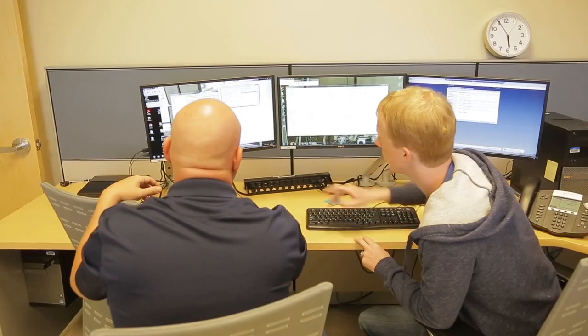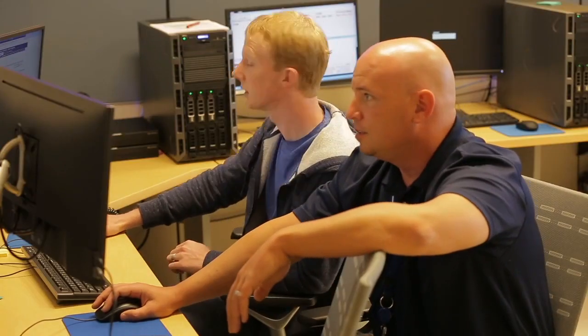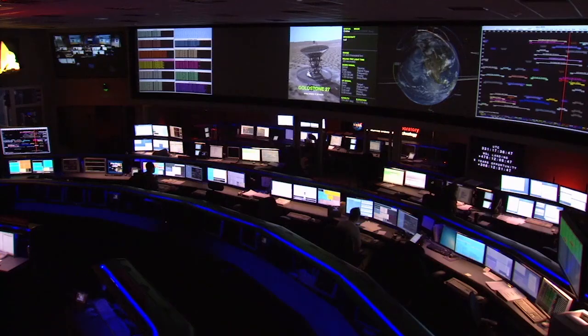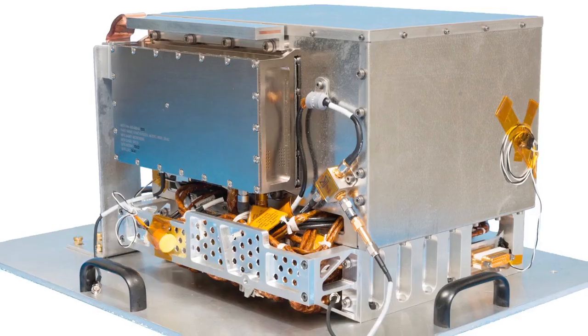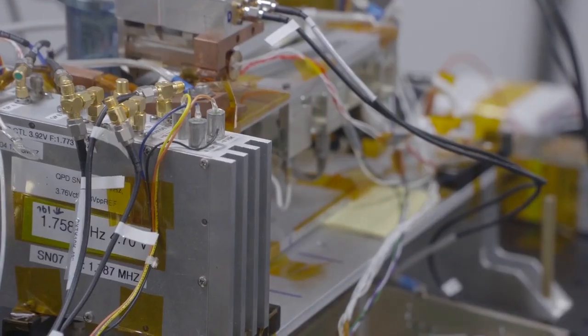NASA's Deep Space Atomic Clock will be off by less than a nanosecond after four days, and less than a microsecond after ten years. This is equivalent to being off by only one second every ten million years.